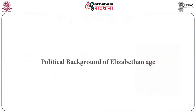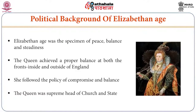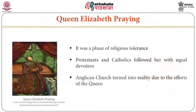Here are some important facts about the political background of the Age. The Elizabethan Age was the specimen of peace, balance and steadiness. The Queen achieved proper balance at both the fronts, inside and outside England. She followed the policy of compromise, balance and stability. The Queen was supreme head of the church and the state. Therefore, it was easy for her to have control over all administrative works. It was a phase of religious tolerance — Protestants and Catholics followed her with equal devotion. That was a mastery of the Queen. The Anglican church turned into reality due to the efforts of the Queen.